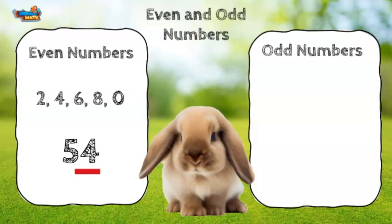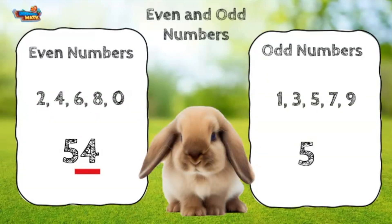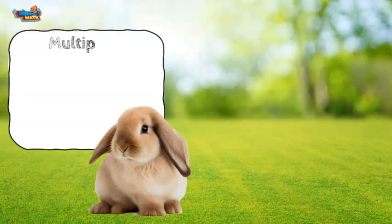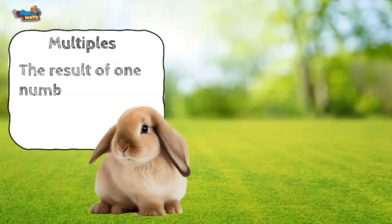Odd numbers are numbers that are not divisible by two. Odd numbers end with one, three, five, seven, or nine. The number 51 is an odd number. If the digit in the ones place is odd, then the whole number is odd.